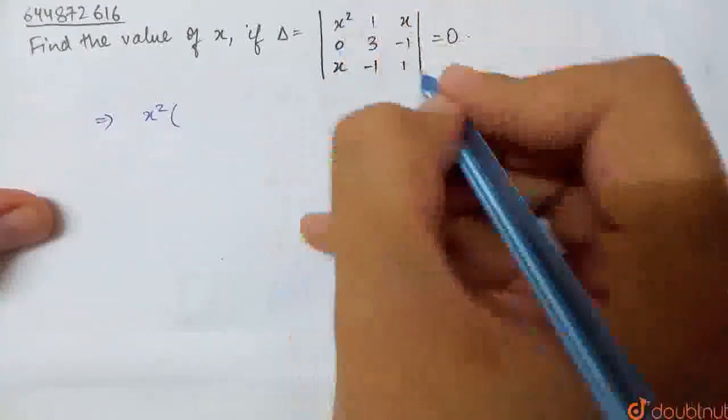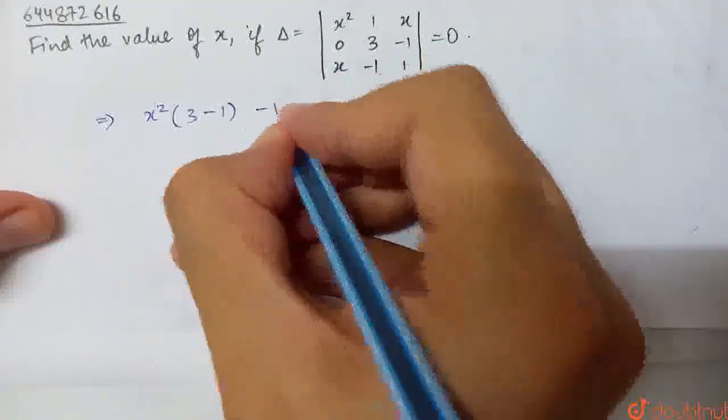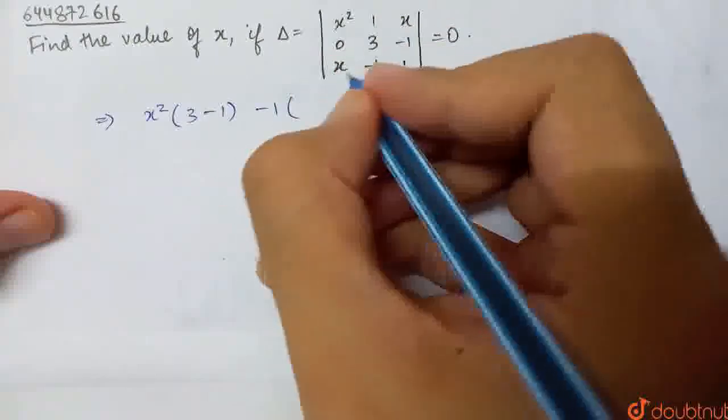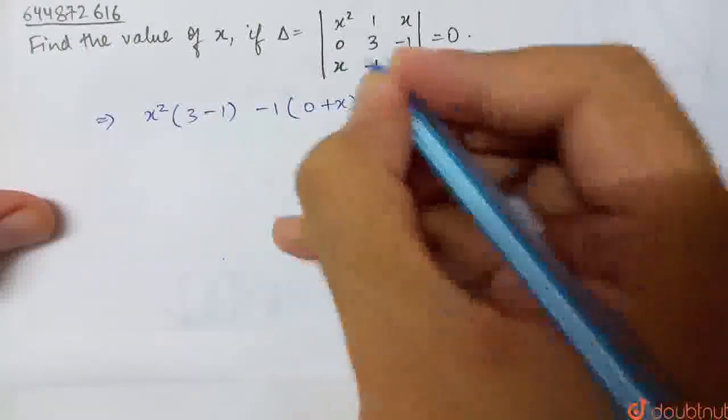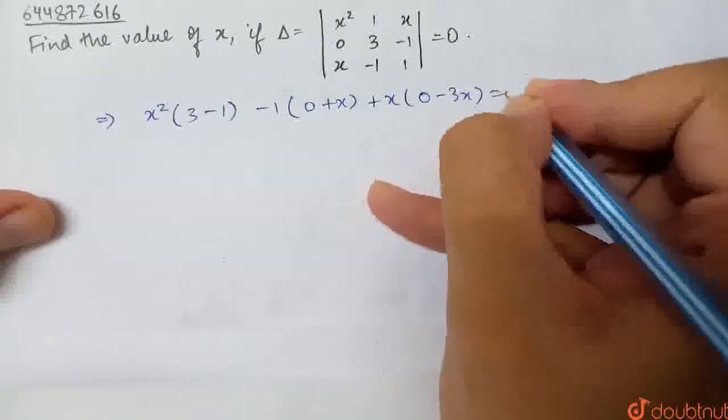So what is x squared? This is 3 minus 1, 3 minus 1. Minus 1 into 0 minus minus x, that is 0 plus x. Plus x into 0 minus 3x. This is equal to 0.